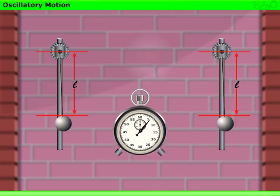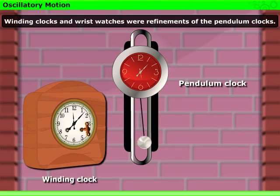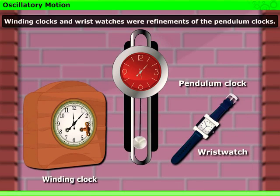This observation led to the development of pendulum clocks. Winding clocks and wrist watches were refinements of the pendulum clocks.